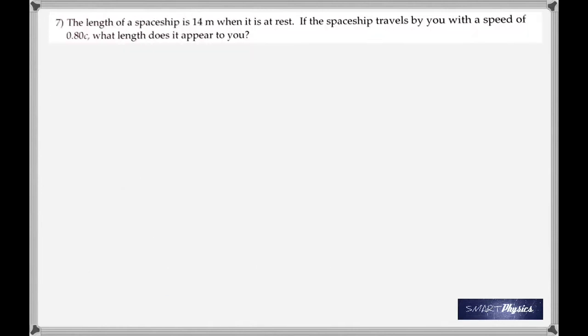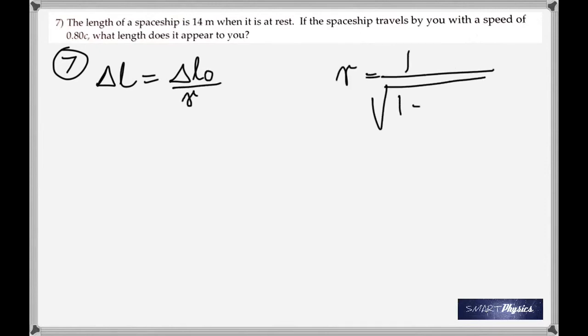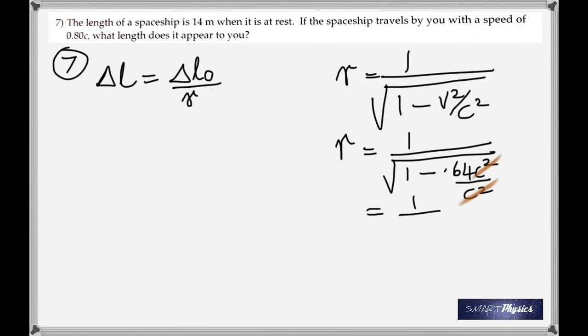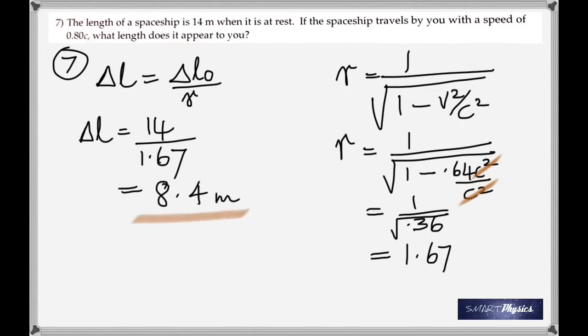Number 7, again, it's a length contraction. Direct application. You have the formula for length contraction. Find the value of gamma. You get it as 1.67. Put it back into the equation. Delta L naught is 14. So you get 8.4 meters.